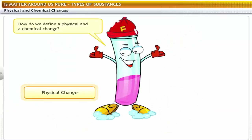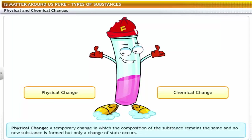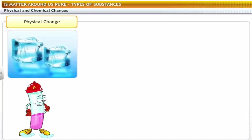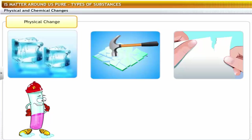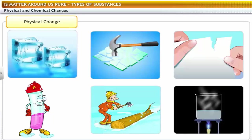How do we define a physical and a chemical change? After observing the experiment, we can define a physical change as a temporary change in which the composition of the substance remains the same and no new substance is formed, but only a change of state occurs. Melting of ice, breaking of glass, tearing of paper, cutting of wood, and changing of water to water vapor are examples of physical change.